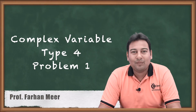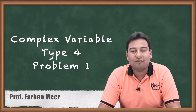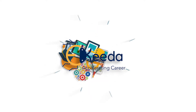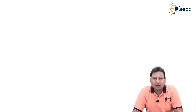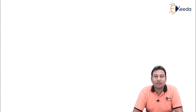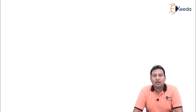Hello friends. In this video we will be discussing complex variable type 4: orthogonal trajectory, and we will solve one problem on it. Till now we are done with type 1 (analytic function), type 2 (harmonic function), type 3 (finding analytic function f(z) if u, v, u+v, or u−v is given). Now we are starting with type 4, that is orthogonal trajectory.